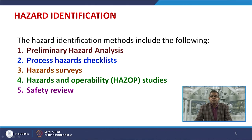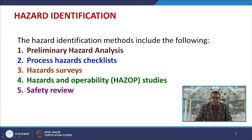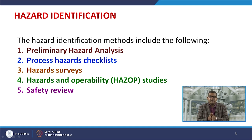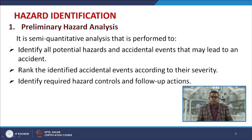In continuation to that, the hazard identification methods may include the following aspects: preliminary hazard analysis, constructing the process hazard checklist on the basis of different hazard analysis and identification protocols, performing hazard surveys, conducting hazard and operability studies (HAZOP studies), and performing safety reviews.